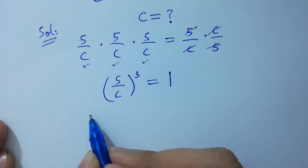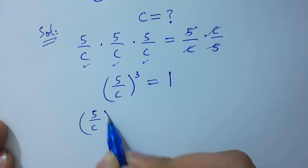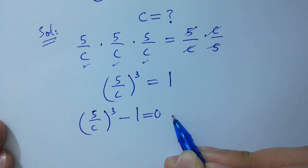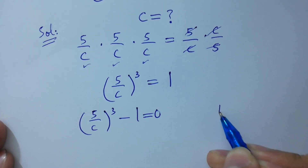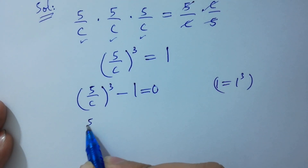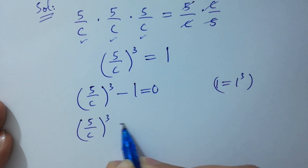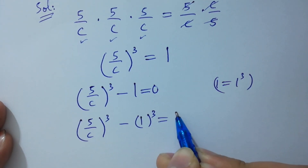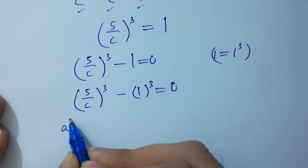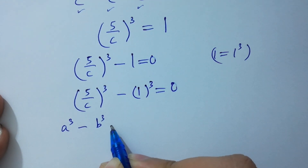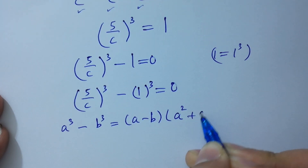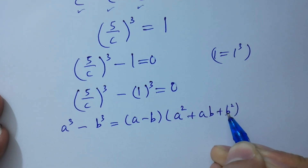(5/c)³ minus 1 equals 0. Since 1 equals 1³, it will be (5/c)³ minus 1³ equals 0. As we know that a³ minus b³ equals (a minus b)(a² plus ab plus b²).